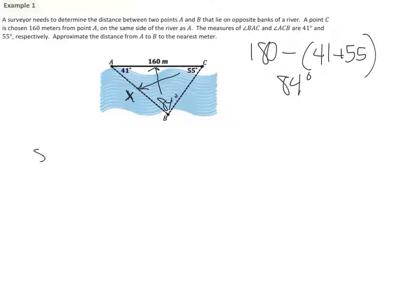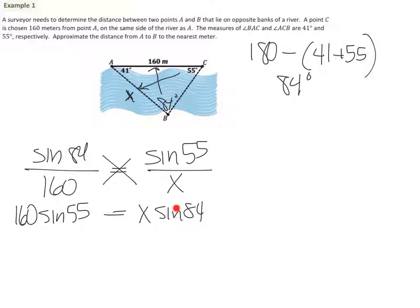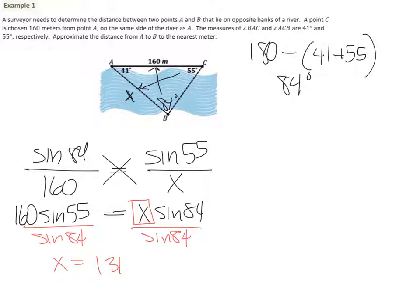So we can say: sine of 84 degrees over 160 equals sine of 55 degrees over x. Cross-multiplying gives x times sine 84 equals 160 times sine 55. To get x by itself, divide both sides by sine 84. So x equals 160 times sine 55 divided by sine 84, and I get x equals 131.8 meters. Not too bad — the Law of Sines, you thought it was going to be hard, but you got it!